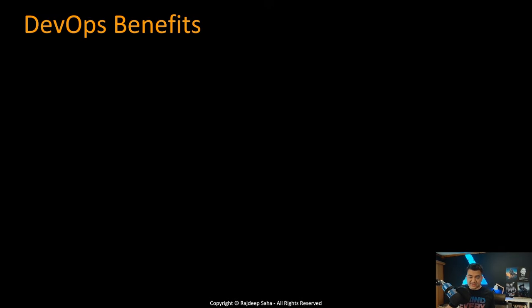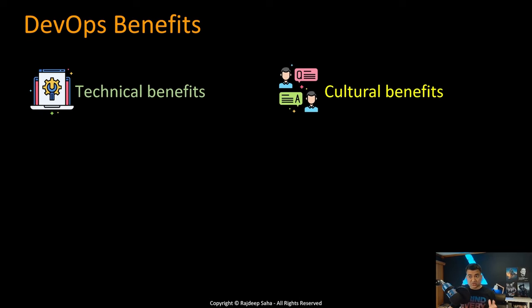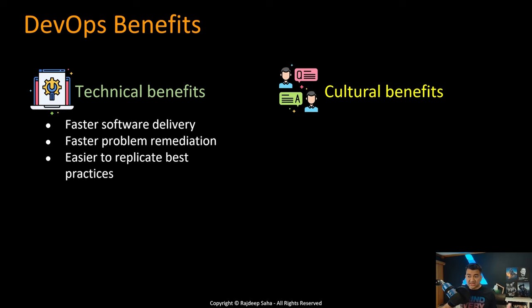Next question: what are some DevOps benefits and challenges? Benefits are easier; challenges are trickier. For benefits there are two big areas: technical and cultural. Technical benefits include faster software delivery, faster problem remediation, and easier replication of best practices. If you have a DevOps tool chain with security best practices built in, you can replicate it to another region or environment like staging, dev, test, or another production environment by rerunning your pipeline as code and infrastructure as code.